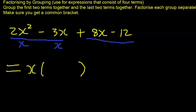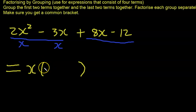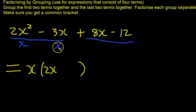We divide both terms by the highest common factor, which is x. So x into x² gives us x, so we have 2x. And x into x gives 1, so we have minus 3. The bracket for the first group is (2x minus 3).